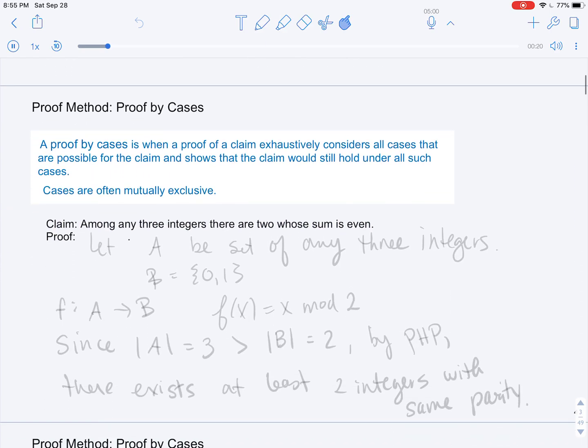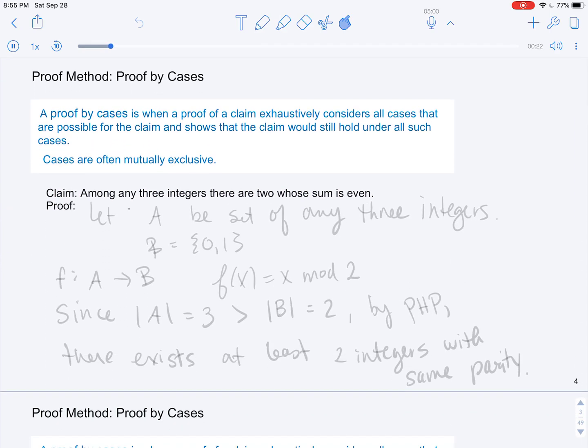First, proof by cases. When we conduct a proof by cases, we consider exhaustively all the possible cases that can occur and show that the claim would hold under all such cases. We make sure that our cases are mutually exclusive most often, and what we mean by that is we try to make sure that all the cases cannot happen simultaneously, or even pairwise simultaneously.